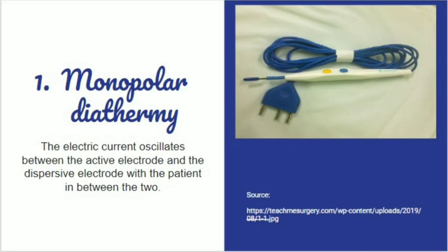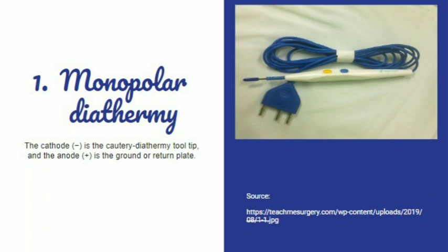First we will discuss monopolar diathermy. Monopolar means one active pole; the other is a ground or dispersive medium where the electricity goes to disperse. The electric current oscillates between the active electrode and the dispersive electrode with the patient in between. As you can see in the figure, there is only one tool tip — the cathode, the active electrode. The other is the ground plate, or dispersive plate, that acts as the anode.